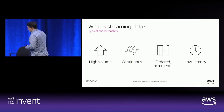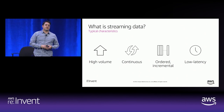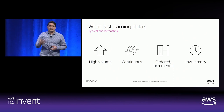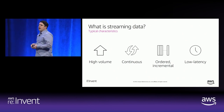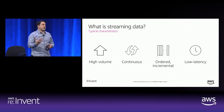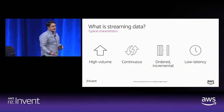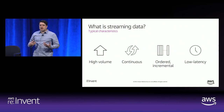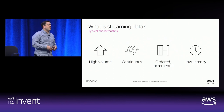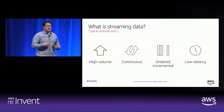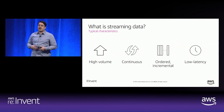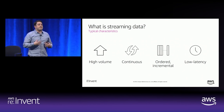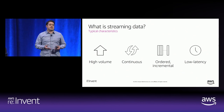Let's talk about what streaming data is. Streaming data is data that is generated at high volume, continuously, and then typically captured and processed in an ordered and incremental manner with low latency. When we talk about streaming data being generated continuously, most data is generated continuously — things like mobile devices, IoT sensors, application logs. The key that makes it streaming is if you continuously capture and continuously process it.